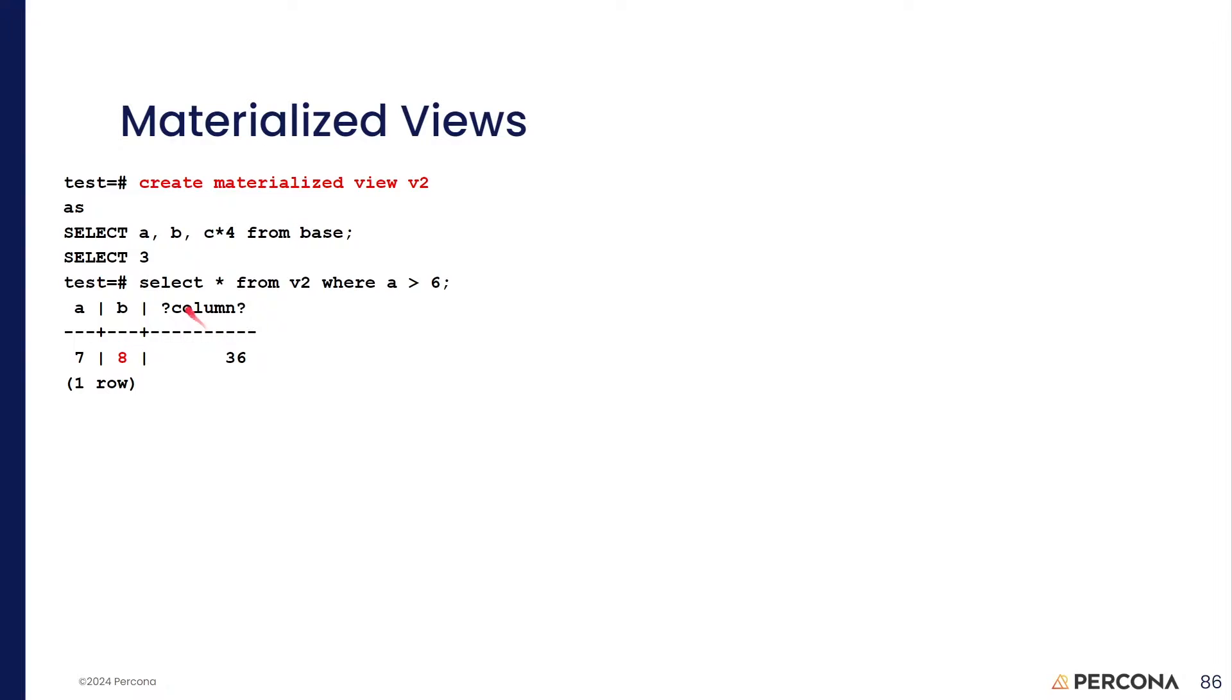And if we run our select, or select all visible columns from V2, where the value of A is greater than 6, you see that our values are 7, 8, and 36.